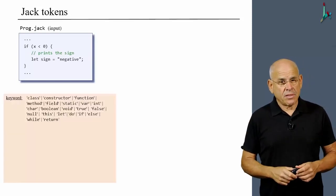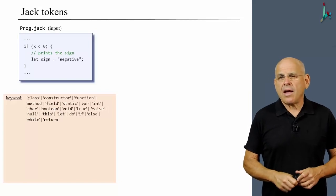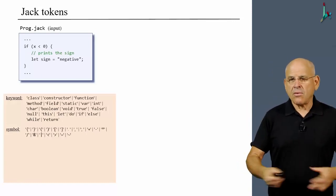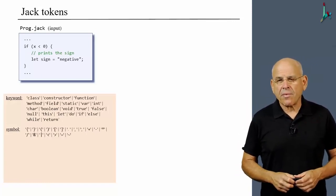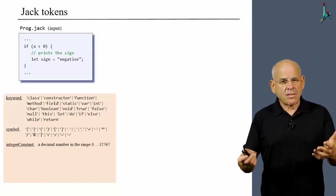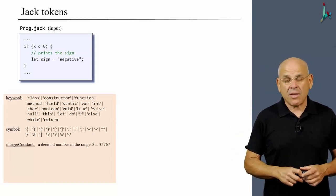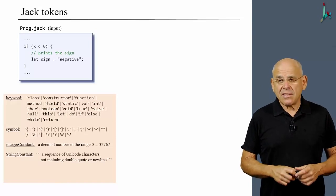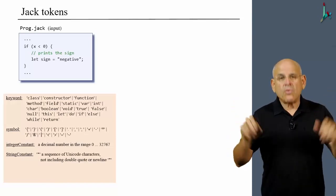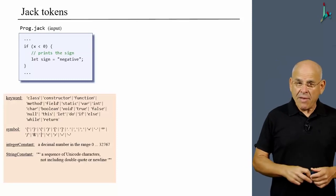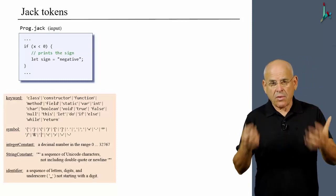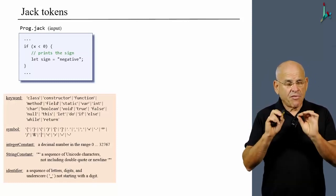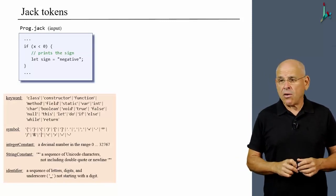Here they are. First of all, we have keywords, of which we have about 20 keyword constants. Then we have symbols, like times, divide, and so on. Then we have integer constants, which are numbers that vary from 0 to 32,767. Then we have string constants, which is anything that exists within two double quotes. And finally, we have identifiers, which we use to call variables, methods, classes, and so on. And every one of these categories is very well defined without any ambiguity or uncertainty.